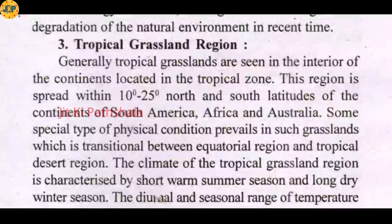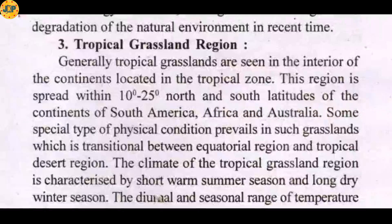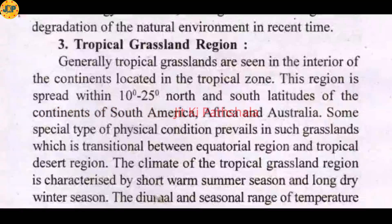Generally, tropical grasslands are seen in the interior of the continents located in the tropical zone. This region is spread within 10 degrees to 25 degrees north and south latitude. Tropical grasslands are found in the interior parts of continents, from 10 degrees north to 25 degrees south.